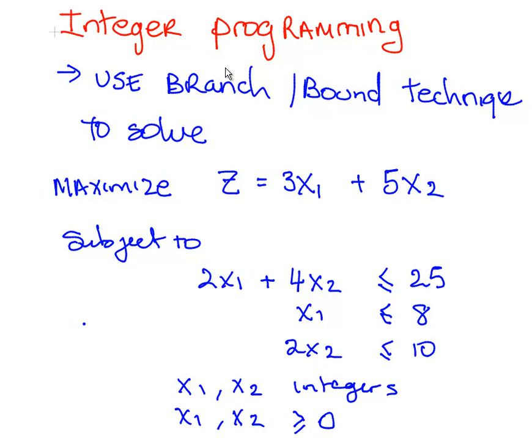So this is an integer programming problem, and what we're going to do here is use the branch and bound technique to solve this problem. What we're going to do here is maximize this objective function according to these constraints below. So the objective function here is essentially z equals 3x1 plus 5x2, subject to these constraints.